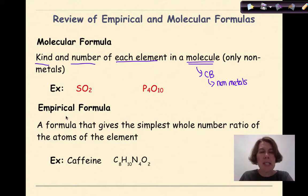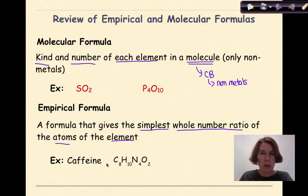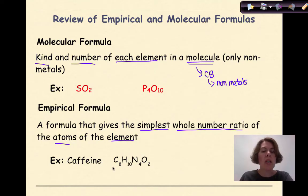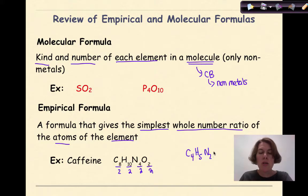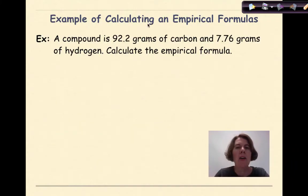An empirical formula is different than a molecular formula. An empirical formula is a formula that gives the simplest whole number ratio of the atoms of the element. For example, here we have caffeine. The molecular formula of caffeine is C8H10N4O2. To figure out the empirical formula for this, we have to look at all the numbers and figure out what number will divide into all of these numbers equally. We see that 2 is the highest number that will divide into all of these numbers equally. So 8 divided by 2, 10 divided by 2, 4 divided by 2, and 2 divided by 2 gives us the empirical formula C4H5N2O. There is an assumed 1 at the end of the formula, but it does not need to be written.